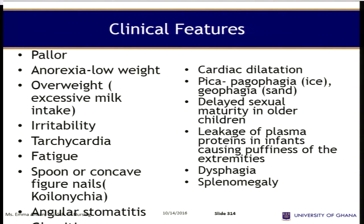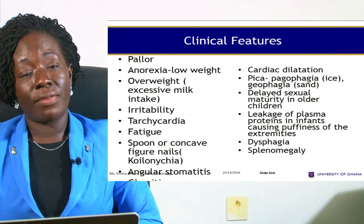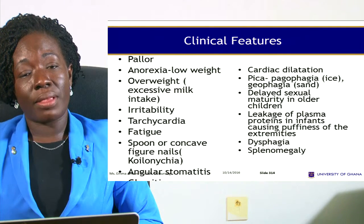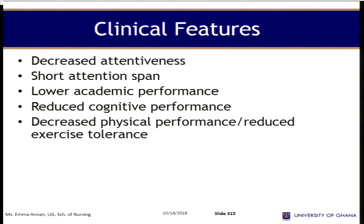The clinical features include pallor and anorexia. Some children may be overweight — being overweight does not mean they have enough iron; they can still have iron deficiency anemia. There is also irritability, fatigue, spoon-shaped or concave fingernails, and sometimes cardiac dilatation. Children may crave for pica. There is also decreased attentiveness, short attention span, reduced cognitive performance, decreased physical performance, and reduced exercise tolerance.